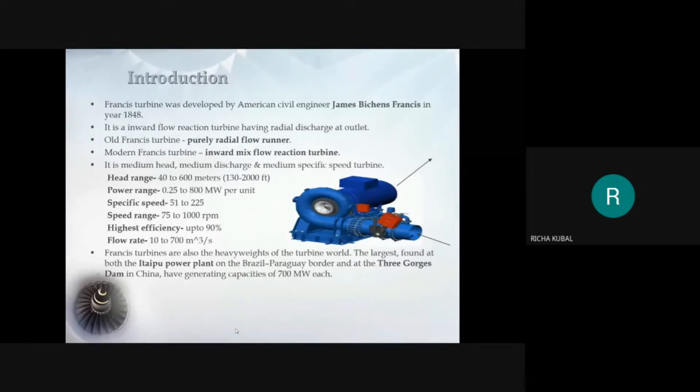This turbine is used where there is a need of medium head, medium discharge and medium specific speed. The head range is between 40 to 600 meters but delivers its best performance between 100 to 300 meters. The following are the other specifications of turbine as power range, speed range, specific speed, efficiency and flow rate.